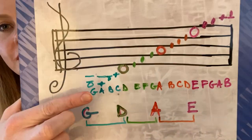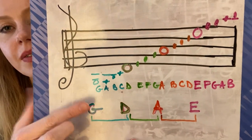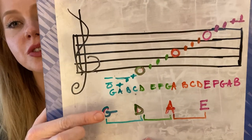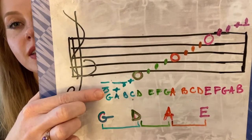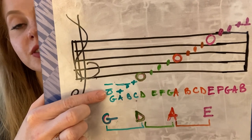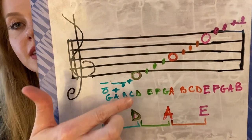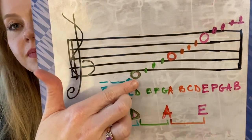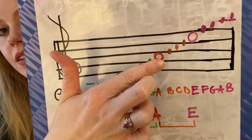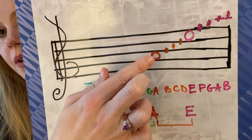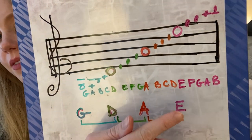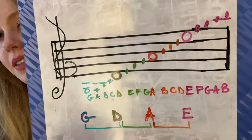First of all, what we have down here are the open strings. Your open string looks like this. This is your lowest string — this is G. The next string over is D. It looks like this. The next string over is A. It's a space note — it's on the second space from the bottom. And then you have E, which is on the very top space.